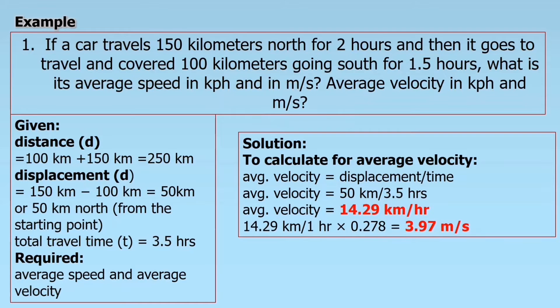Next is to calculate the average velocity. Same as usual, copy the formula. Average velocity equals displacement over time. Substitute it with the given. Displacement equals 50 kilometers divided by time 3.5 hours, which equals 14.29 kilometers per hour. To convert it into meter per second, 14.29 kilometers divided by 1 hour times 0.278 equals 3.97 meters per second. That is the average velocity of the car.